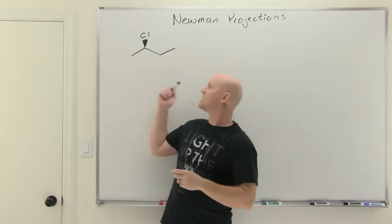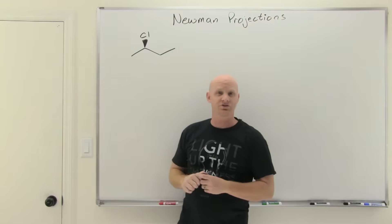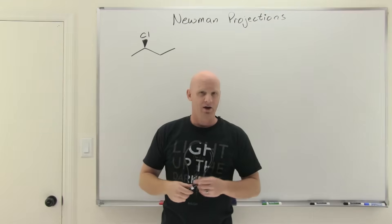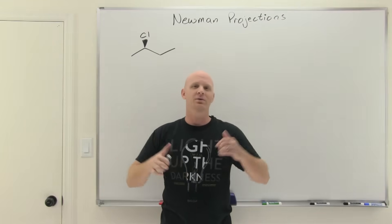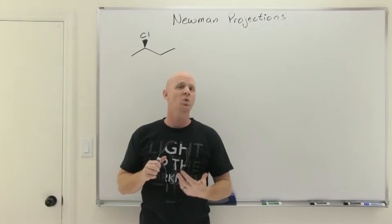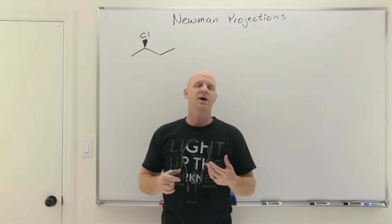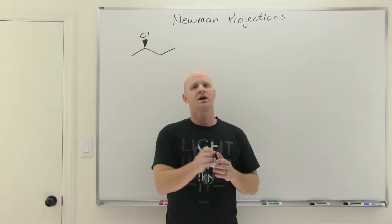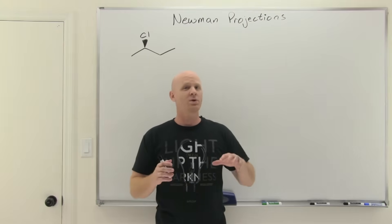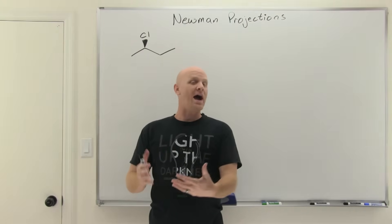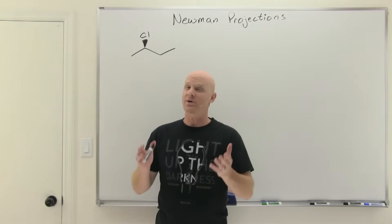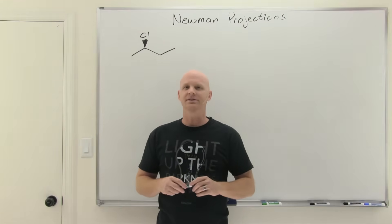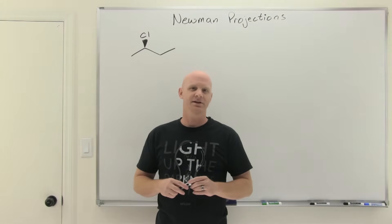Newman Projections — before we get to a more complicated example, the standard place to start is what we call butane, and we're definitely going to start there. But rather than putting it on the board, I think it'd be really instructive if you actually see a model of butane and match it up with the different conformations in a Newman Projection. Unfortunately my model kit is rather small, as is yours in all likelihood, and I highly recommend you build this model. If we take a look at my document cam, it'll be a little easier to see what I mean.